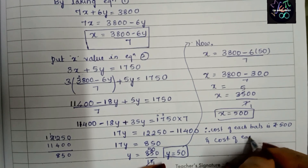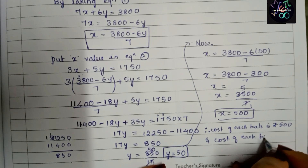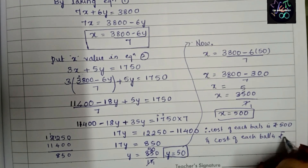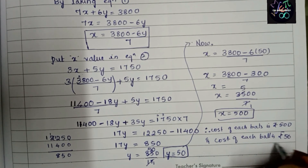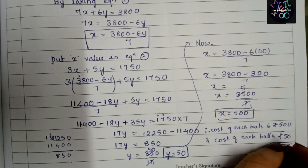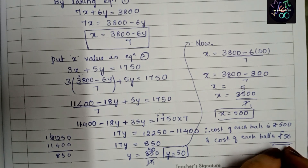Therefore, the cost of each bat is rupees 500 and the cost of each ball is rupees 50. This completes Question 3 of Exercise 3.2. In my next video I will cover the next problem. Please do like, share, and subscribe to my channel. Thank you.